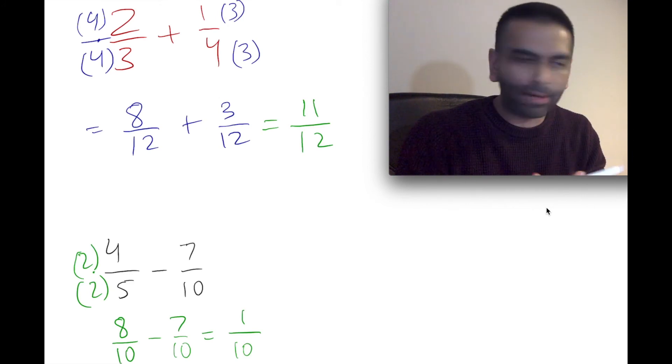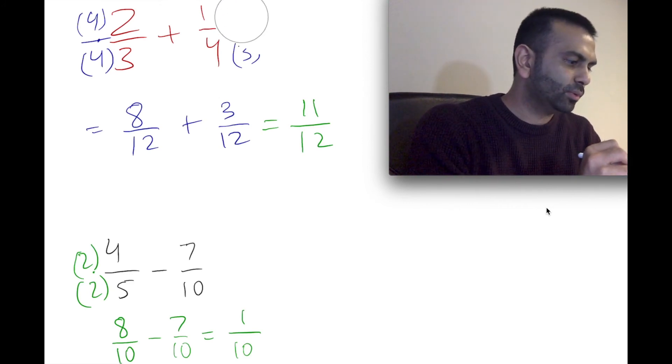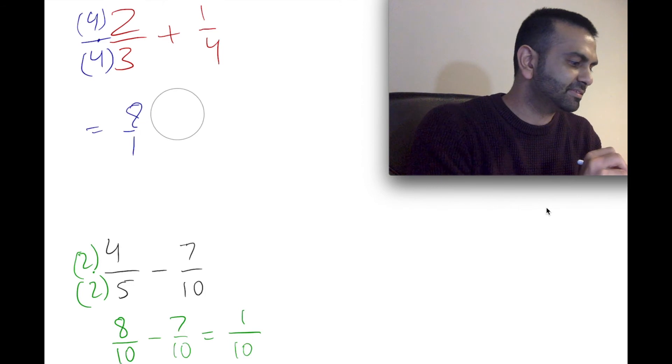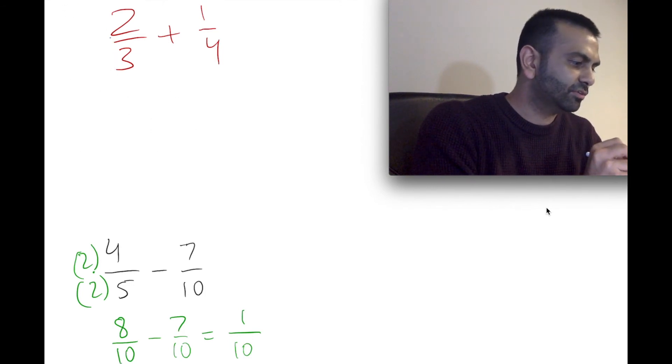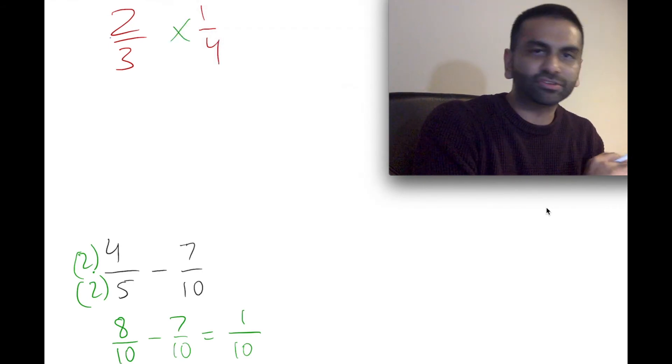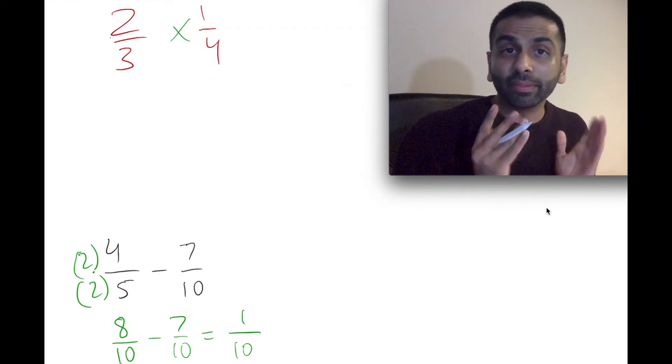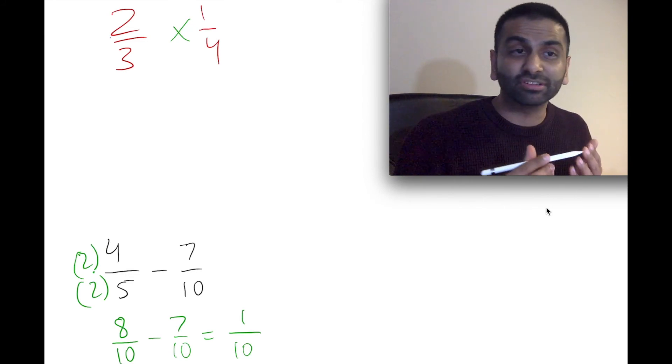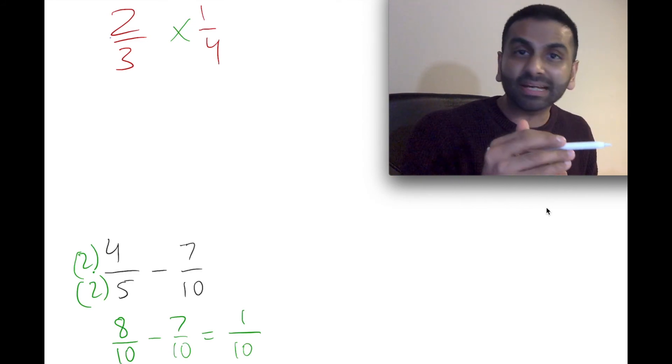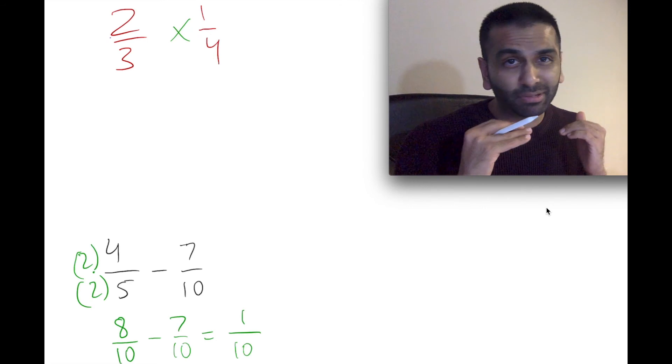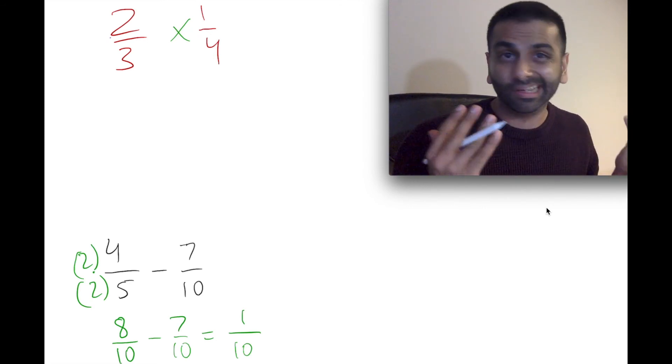So that's adding and subtracting. What about multiplying and dividing? Well, let's take these same two problems and see how our answer would change if we were multiplying instead. So, for example, this first one, what if it was 2/3 times 1/4? Well, the good news is it's easy. You actually just literally multiply the numerators with each other and multiply the denominators with each other, and you're done.